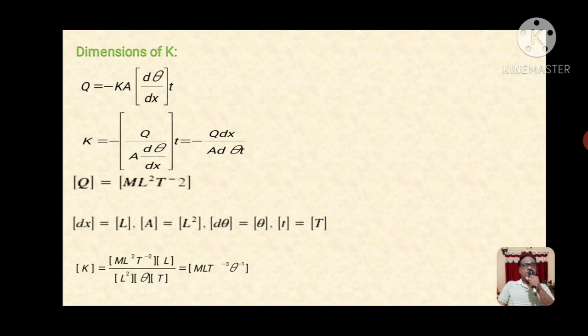Now we will see the dimensions of K. Q equals minus KA d theta by dx, where d theta by dx means change in temperature with respect to distance. K equals minus Q dx upon A d theta times t.